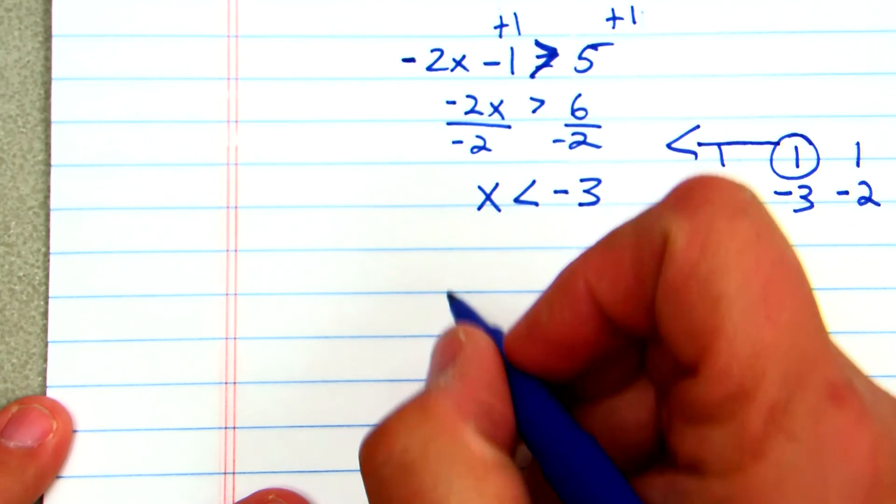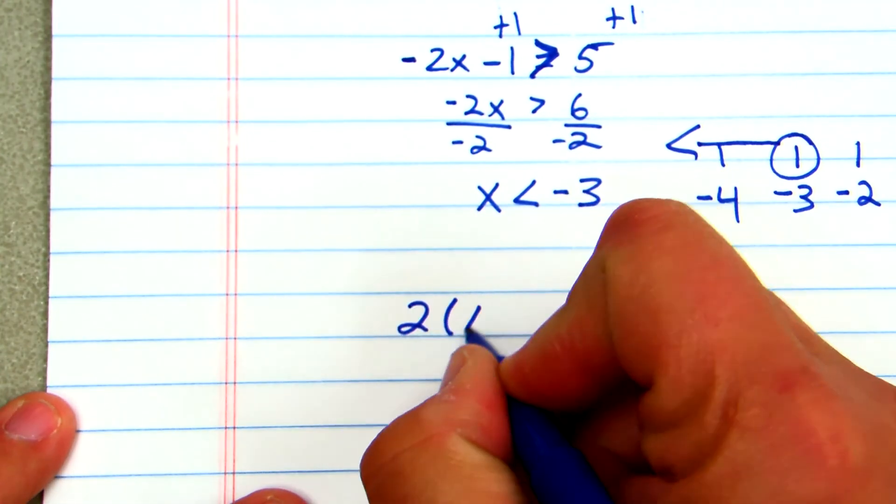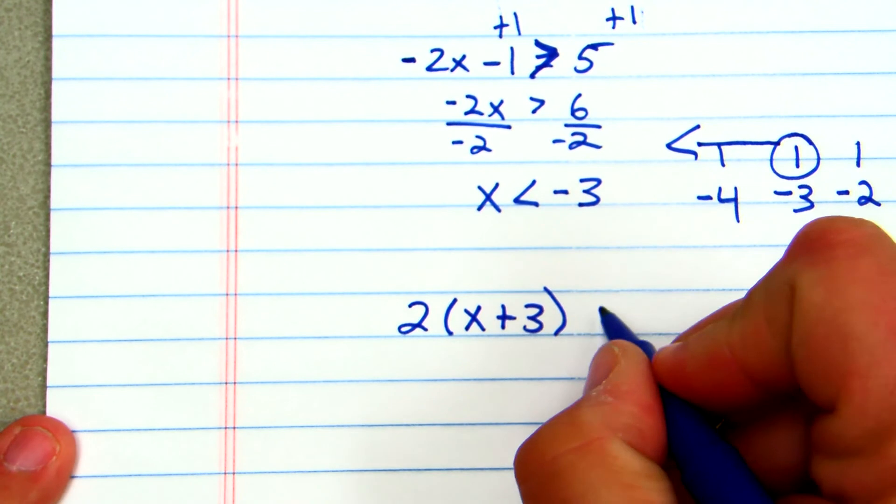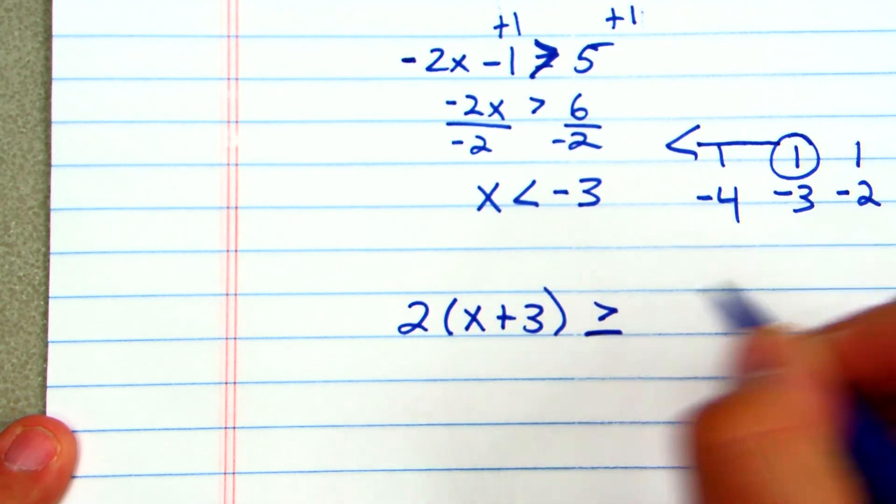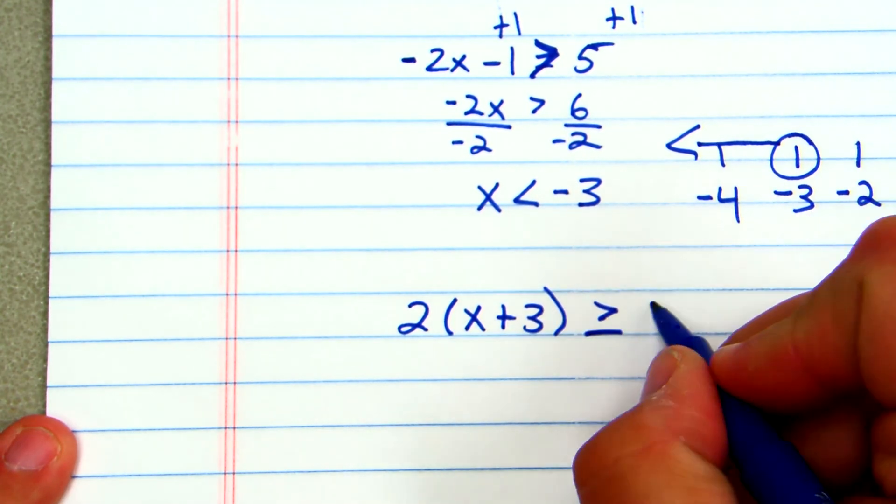All right, I'll show you one more. Let's say we had 2, and then here I had x plus 3 is greater than or equal to 7.